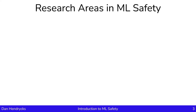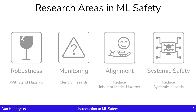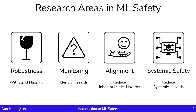Machine learning safety has multiple research areas. We'll talk about four in this course. There's robustness, which at a high level is about building models that are less vulnerable and help them withstand hazards. Monitoring is about identifying hazards. Alignment is about reducing inherent model hazards. And systemic safety is about reducing systemic hazards. We'll describe what these mean in more detail now.